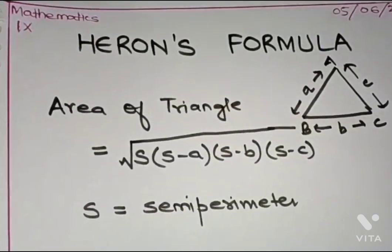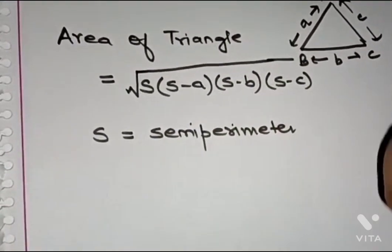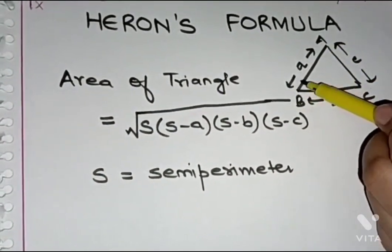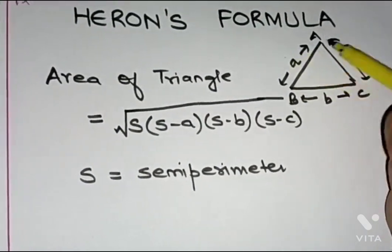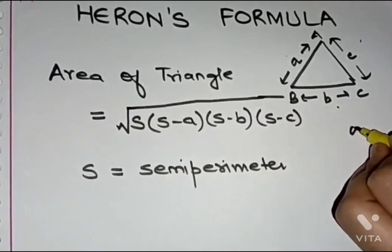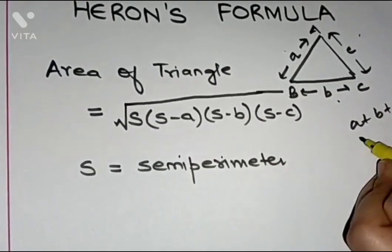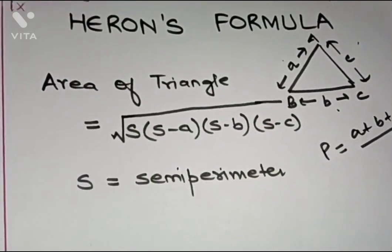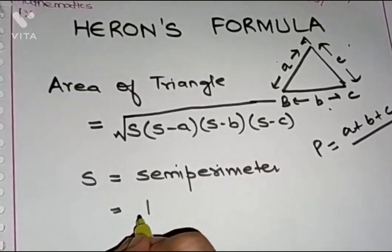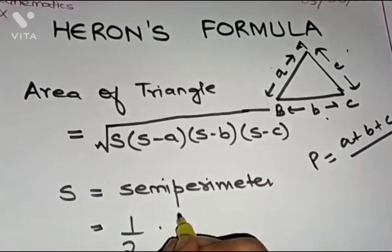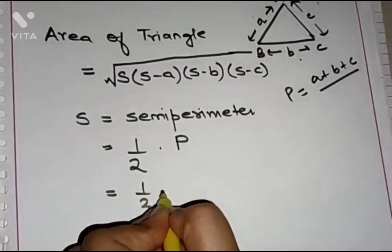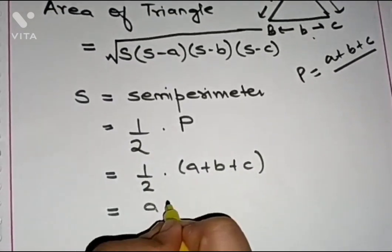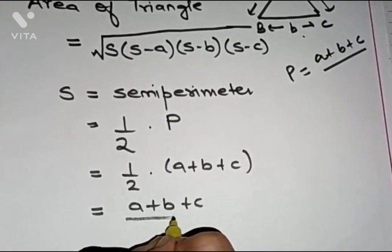You all know the perimeter is the total length of the border of any geometrical figure. For a triangle with sides a, b, and c, the perimeter is a + b + c. Semi means half, so the semi-perimeter s is half of the perimeter: s = (a + b + c) / 2.